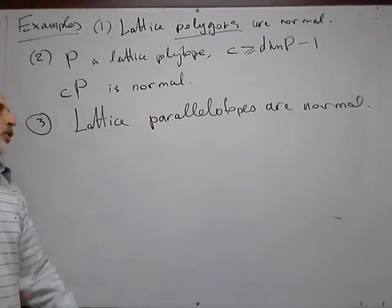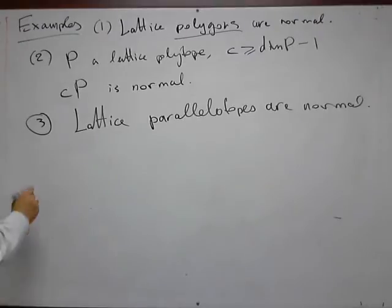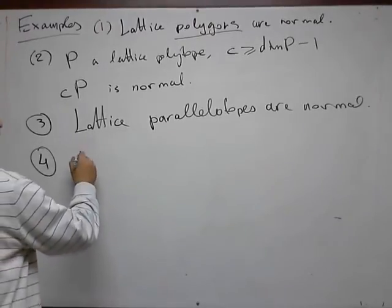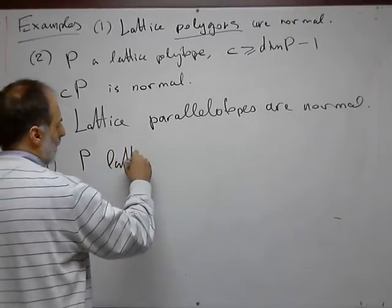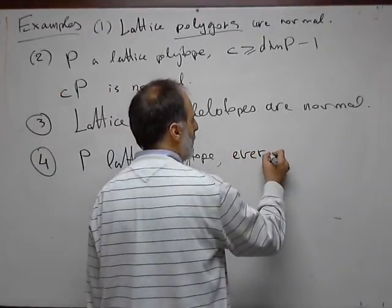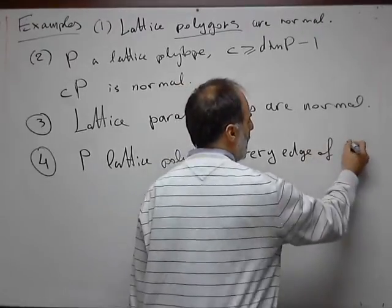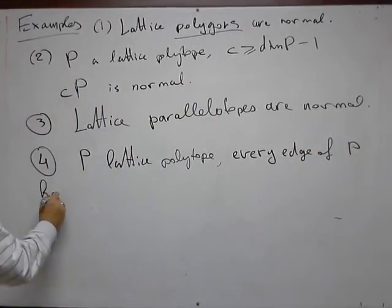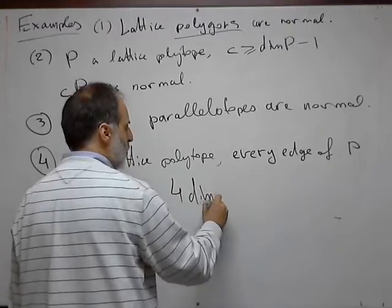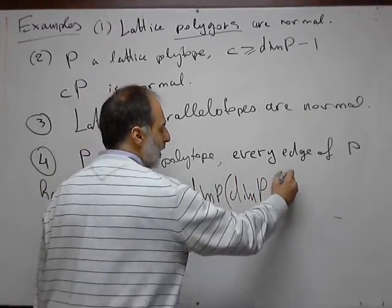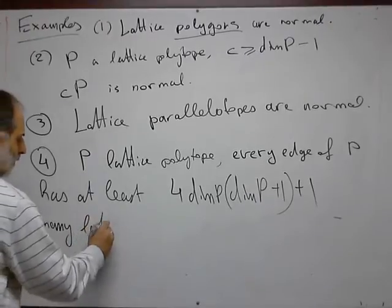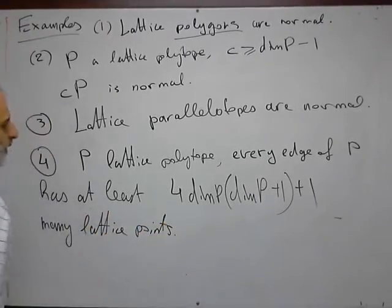Next, lattice parallelotopes in any dimension are normal—not necessarily rectangular parallelotopes, and in any dimension. Then we have the following class: So P, a lattice polytope, assumes that every edge of P has at least four times the dimension of P times the dimension of P plus one, plus one, many lattice points. Then P is normal.